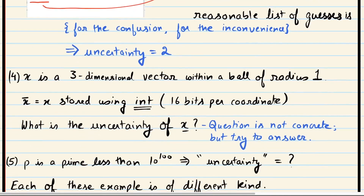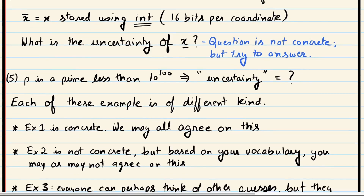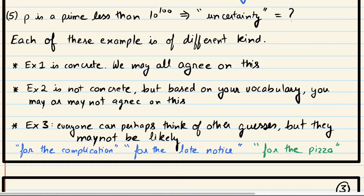For you, there are many more possibilities because you haven't seen my emails and don't know what I typically write. So your uncertainty is much larger. Another example: suppose I told you I have a three-dimensional vector in mind which lies within a unit Euclidean ball of radius one, and this vector can be stored using 16 bits per coordinate. How many such vectors are possible? I leave you to think about that. Also, if I told you I have a prime less than 10 to the power 100, now the guess list is really large — you need a very large computer to list all such primes.